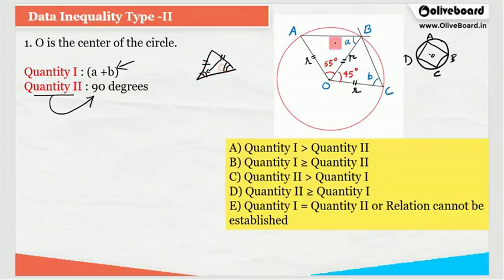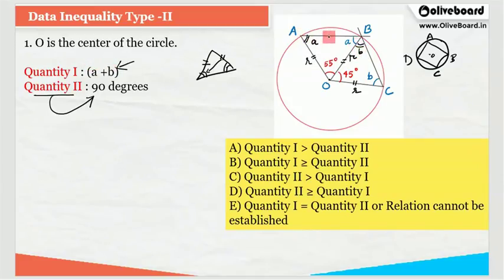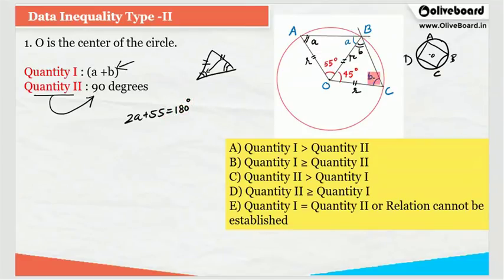In triangle AOB, the opposite angles of the two equal sides are equal, so if one angle is A, the other must also be A. Likewise in triangle BOC, the corresponding equal angles will both be B. Now for triangle AOB, the sum of all three angles is 180 degrees, so A plus A plus 55 equals 180 degrees, giving 2A plus 55 equals 180. Again in triangle BOC, B plus B plus 45 equals 180 degrees, so 2B plus 45 equals 180 degrees.